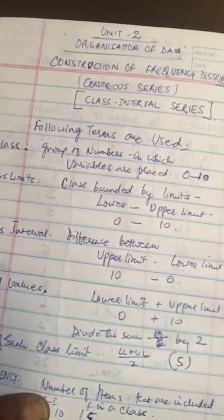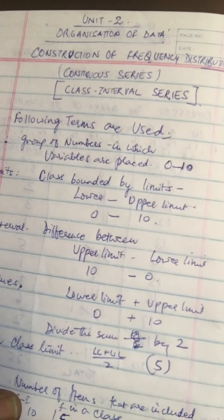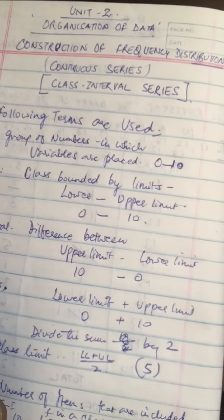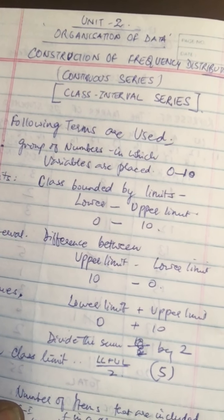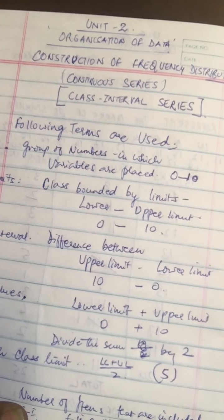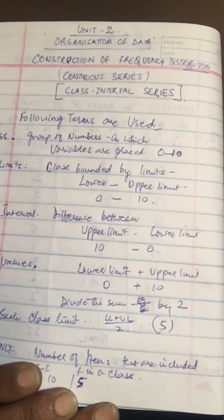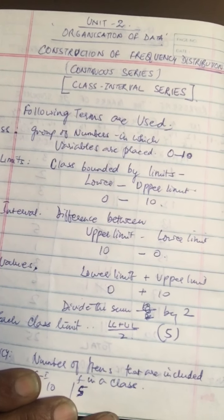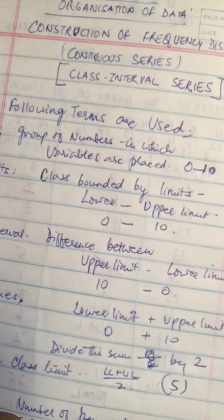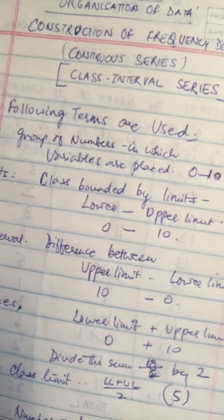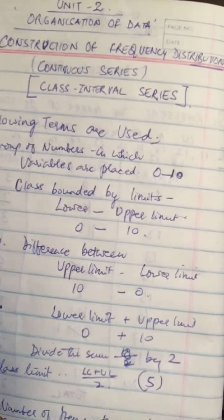And before I go on, let me just again make a note of this. That in the previous series, in the discrete series, the identity of all the values remains. Like for example, when we saw 11 in the last class, we know that 2 students have got 11 marks. 12 marks, 3 students have got 12 marks. But in this, what we see is, in the frequency distribution or continuous series, we notice that the identity of the various values is lost. The individual values of the variables are not found out or they are not used in this classification because they are grouped.